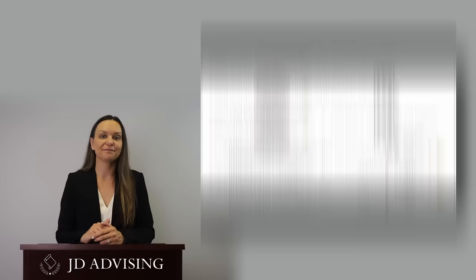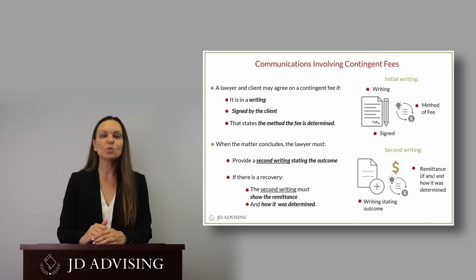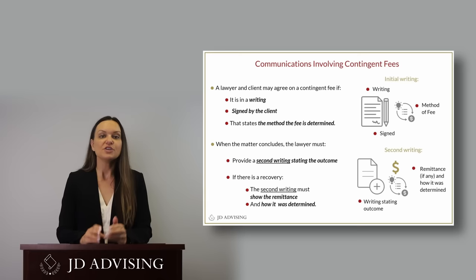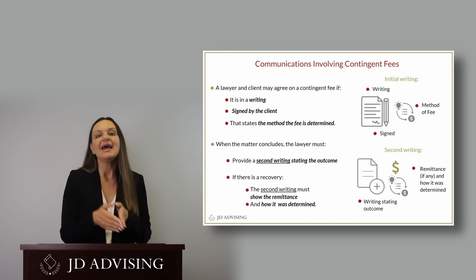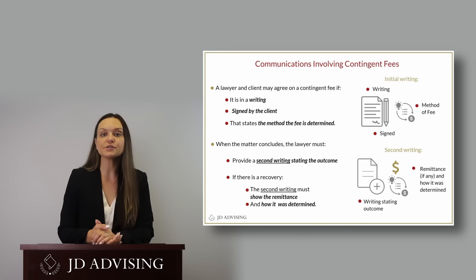When it comes to fees, the fees a lawyer charges must be reasonable and must be communicated to the client in advance. For contingency fees, there are special rules — these types of fee agreements require a writing. Two writings are necessary for an ethical contingency fee: first, the agreement itself, entered at the beginning, which should outline the fee agreement and the calculation of the ultimate fee; and second, a receipt provided at the conclusion of the case stating the outcome, money recovered, expenses incurred, the lawyer's entitlement, and how much the client will ultimately recover.